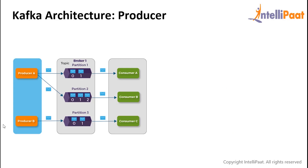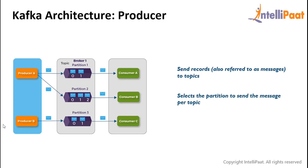Let's check out a few interesting facts about the Kafka producer. Producers send records or messages to topics. Producers will also select which partition a message is to be sent to per each topic. The producer could implement priority systems, sending records to certain partitions depending on the priority of the record. Producers send records to a partition based on the record's key, and they don't wait for acknowledgements from the broker — they send messages as fast as the broker can handle.